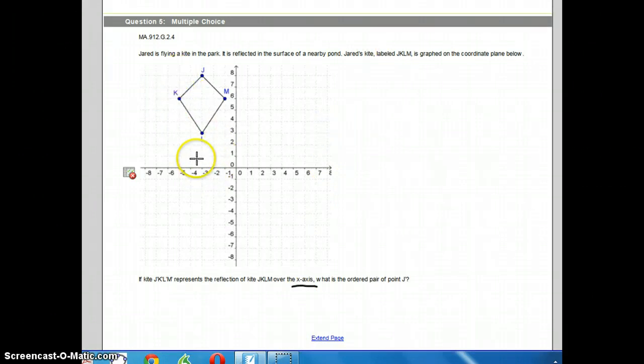So for example, we're looking for point j. Point j is at negative 3, 8.